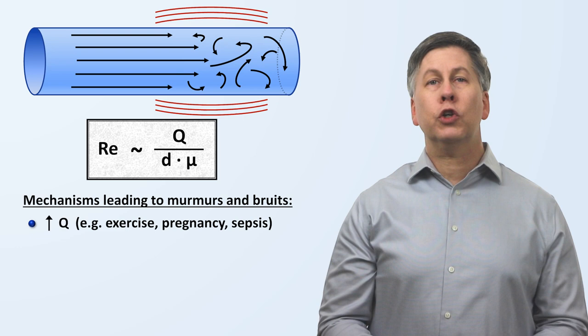With this knowledge, when we listen to a person's heart or blood vessel and we hear a murmur or bruit, we can now speculate about some underlying pathology. For example, a high flow state, such as exercise, pregnancy, or sepsis.